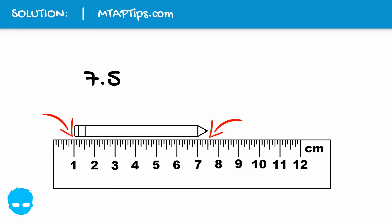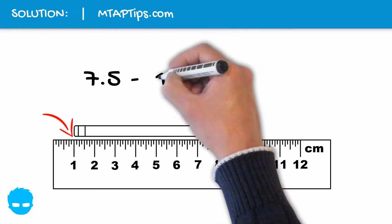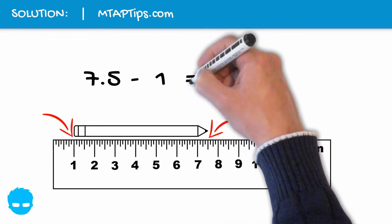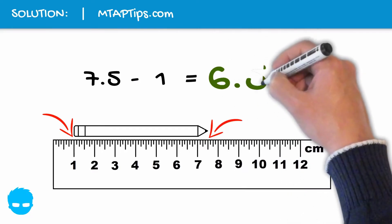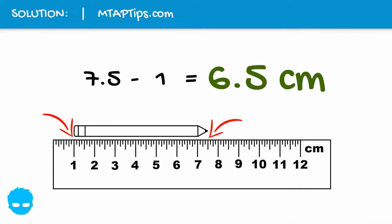To easily find the measurement of this pencil, we just need to subtract 7.5, which is the end point, minus 1, which is the starting point. And we'll have 6.5, so the pencil is 6.5 cm long.